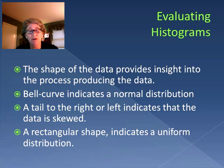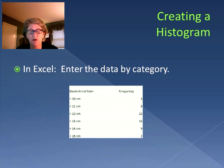When we build a histogram, we can do it in Excel. We enter data by category. So if we're looking at the diameter of a hole, we have all these categories: less than 10 centimeters, between 10 and 11, 11 and 12, and so forth, and we're calculating the frequency for each of these particular categories. Notice none of these categories will overlap so they are distinct from one another.